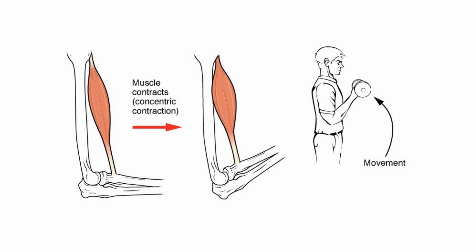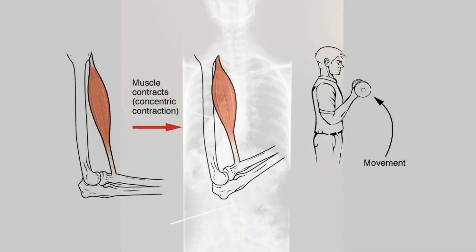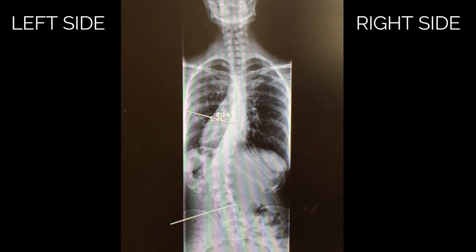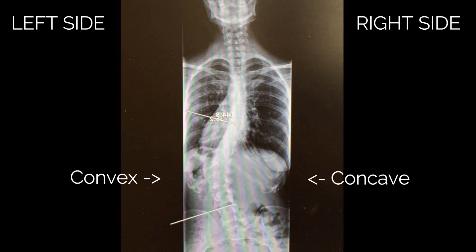Everyone's curvature is different. I'm using this x-ray because it clearly illustrates some points that I want to make. This x-ray was taken from the front, but I flipped it around so that we can talk about the right and left sides more easily. This is a fairly straightforward C-curve — it's concave on the right and convex on the left.